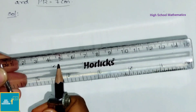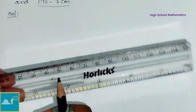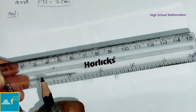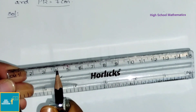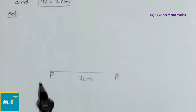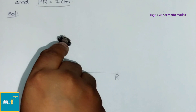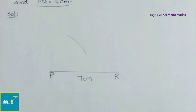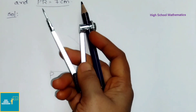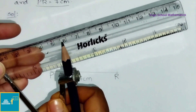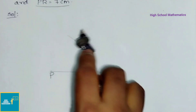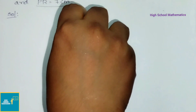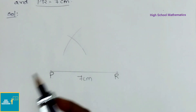Now with P as center, we are going to draw an arc of 4 cm. So let us measure 4 cm using a compass and a scale. Now we have taken 4 cm. With P as center, we are going to draw an arc. Now with R as center, we are going to take a radius of 6 cm and draw an arc. So we have taken 6 cm.